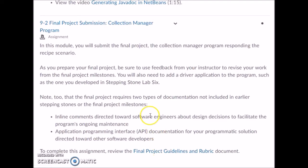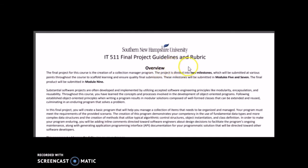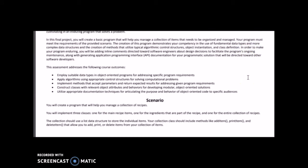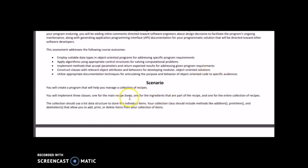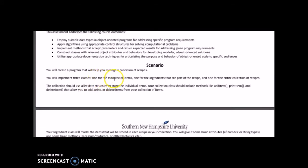Let's look at the final project guidelines and rubric. You'll be building off the two milestones you worked on in modules five and seven — the ingredient class and the recipe class — as well as the most recent one, the recipe box class from stepping stone lab six. You'll be submitting your final project here in module nine this week. You're going to have three main classes: the recipe class, the ingredient class, and the entire collection of recipes, which is the recipe box class.